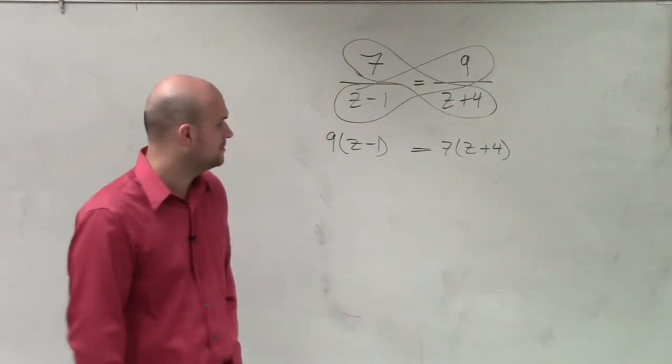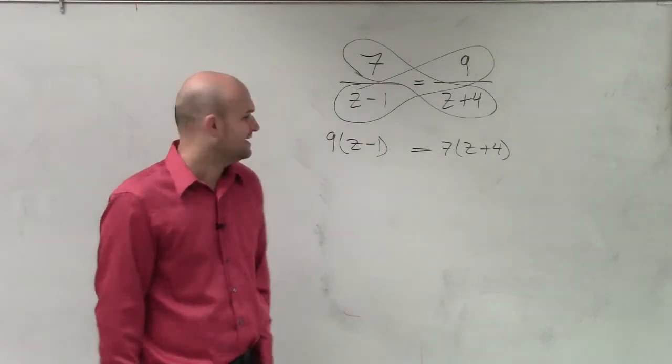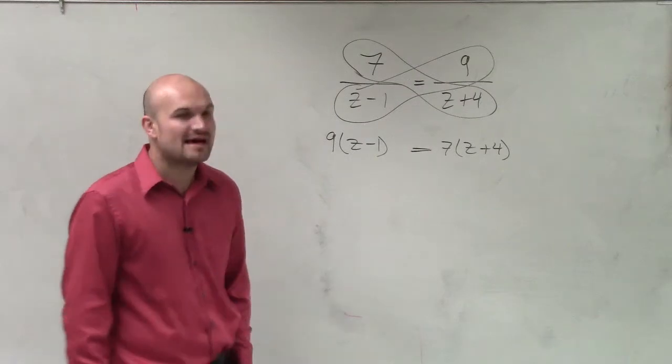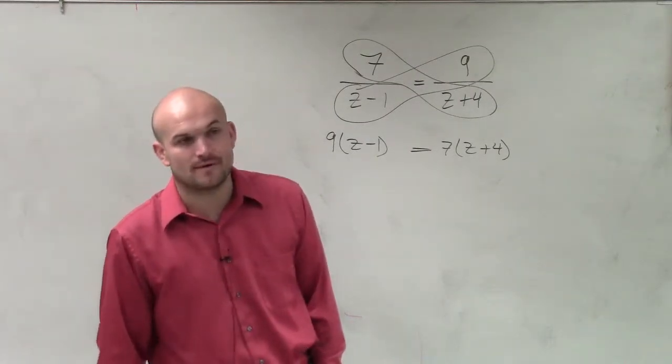So now, I'll say it again. 9 times z minus 1 equals 7 times z plus 4. Correct.